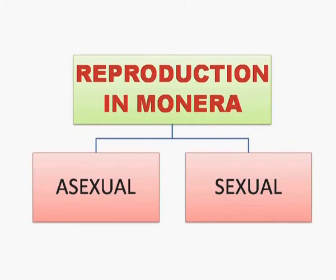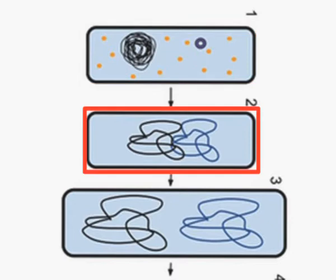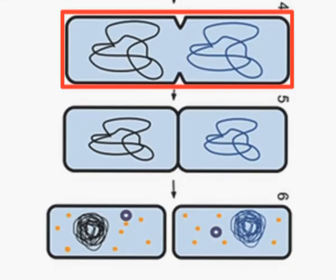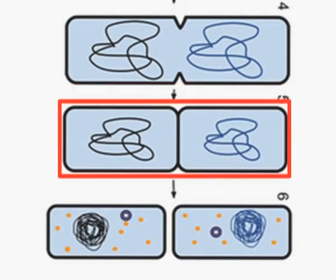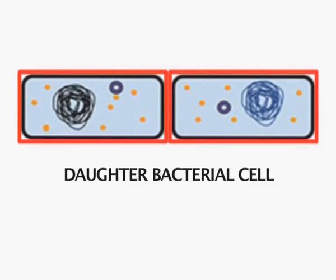Reproduction in Monerans is both asexual and sexual. Asexual reproduction takes place by binary fission. The DNA replicates first, and as it replicates, the bacterial cell starts growing and enlarges in size. Once DNA replication is complete, the two DNA molecules move to the two opposite poles of the bacterial cell. A constriction appears in the middle, deepens, and finally results in the formation of two bacterial daughter cells which separate from each other, each with its own DNA, capable of independent existence.